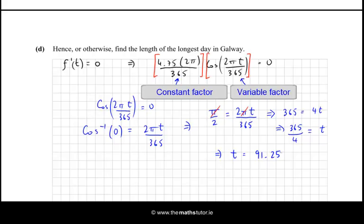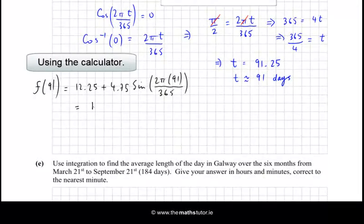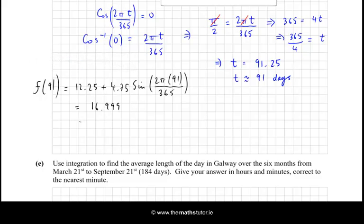Now we need to find the length of the longest day in Galway. So we know when the longest day of Galway is 91.25 days after March 21st. So let's approximate to the nearest whole number. Substitute that into my function and we'll get the length of the day. So now we get f(91) is 12.25 + 4.75 sin(2π × 91 / 365). Close my bracket and we get 16.9999. So we'll approximate that to 17 hours, which will be the length of the longest day in Galway, according to the formula.